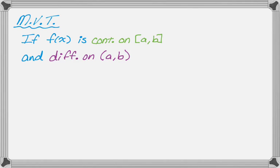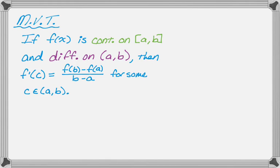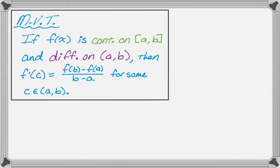It also needs to be differentiable on the open interval from a to b, so in that case you do not include the endpoints. If that's the case, then we know that f'(c) = [f(b) - f(a)] / (b - a) for some value of c, and then we also know that c has to be an element of the open interval from a to b.